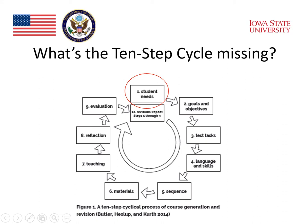We saw an approach to innovation and change in the 10-step cycle that we looked at earlier. But the 10-step cycle is missing something. It starts with identifying students' needs. Who decides that students' needs need to be looked at? Who decides to step into that 10-step cycle? Well, there's a starting point that isn't in the 10-step cycle itself.